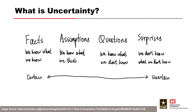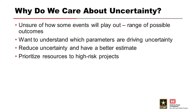Uncertainty is doubt, lack of sureness, the difference between knowledge and ignorance. Things we never knew, things we once knew but forgot, things we don't know we don't know, and things we know we don't know. Uncertainty defines the range of possible values within which the true value of the measurement lies.